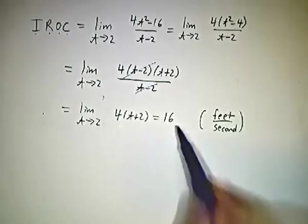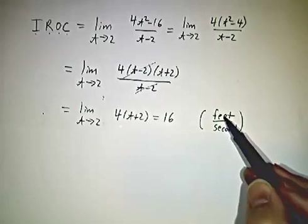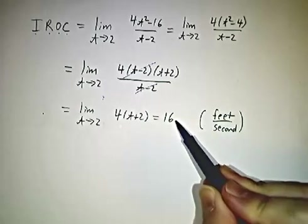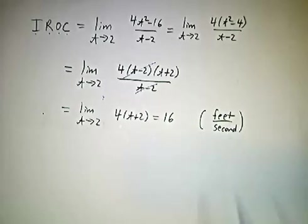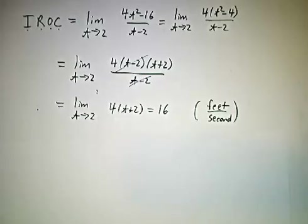And that's 4 times 4, which is 16. Since we're measuring a velocity, the change in the number of feet per number of seconds, it's actually 16 feet per second. That is our instantaneous velocity at t equals 2.